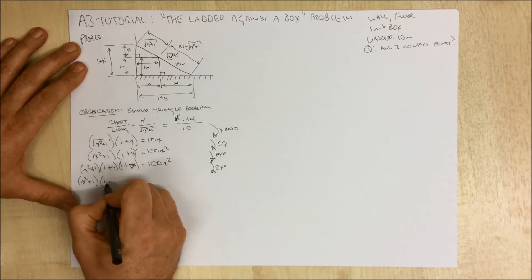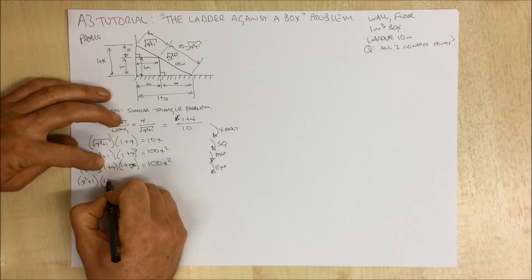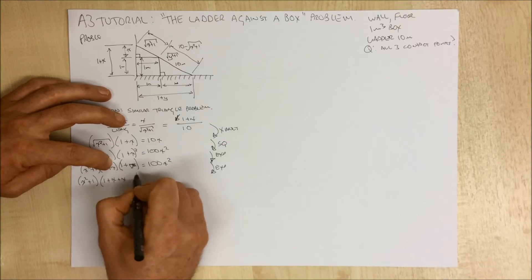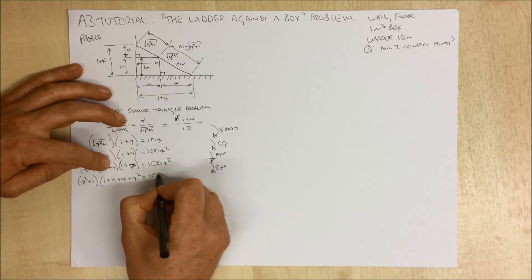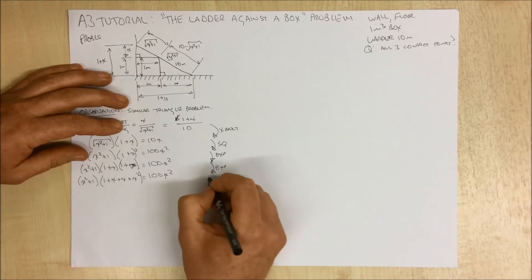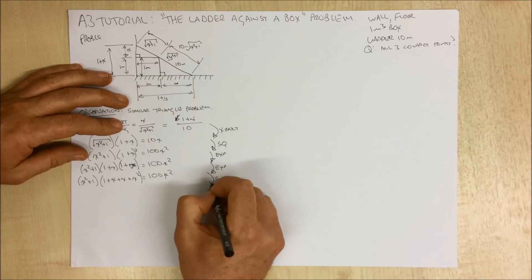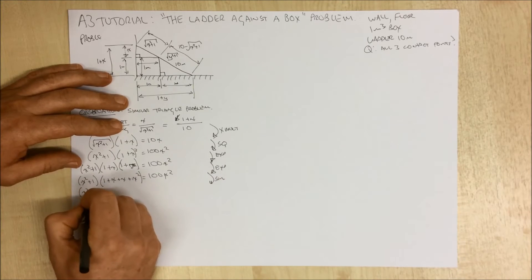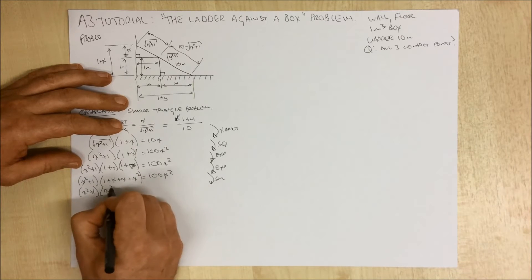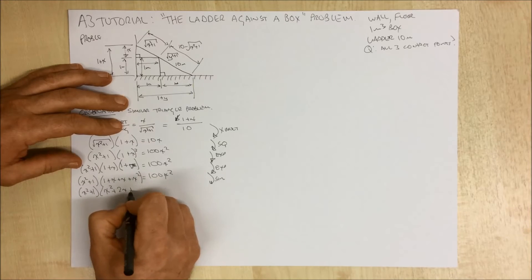So what we can do now is expand this term out. 1 times 1 is 1, 1 times x is x, x times 1 is x, x times x is x squared. And I can simplify that quite easily. x squared plus 1 is x squared plus 2x plus 1.